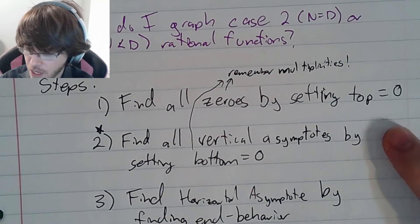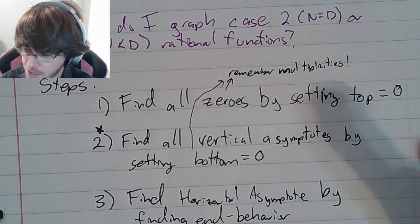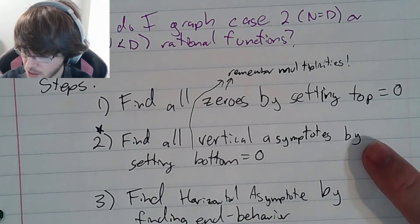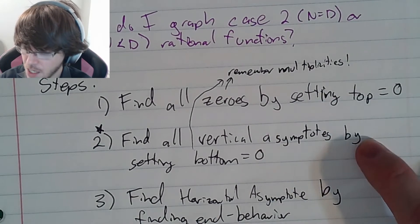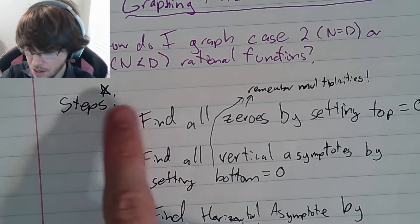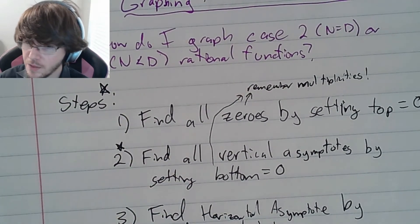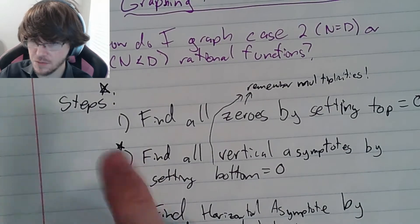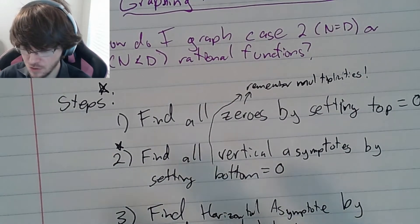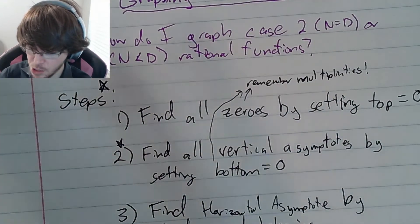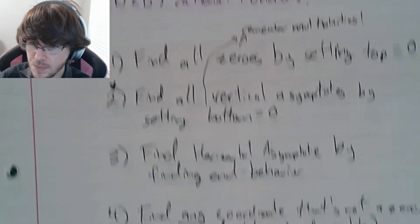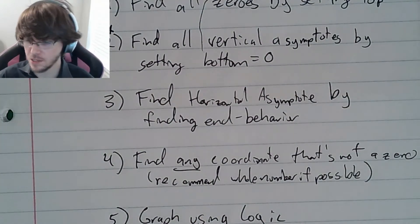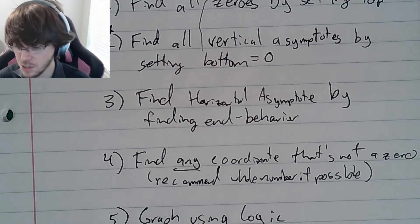Step two: find all vertical asymptotes by setting the bottom — the denominator — equal to zero. Note there's a star on step two because in graphing rational functions part two, there will be a step before this that affects it too — it's just too much for one lesson. Step three: find the horizontal asymptote by finding the end behavior — basically repeating that previous lesson for every question. Step four: find any coordinate that is not a zero; I recommend a whole number if possible.